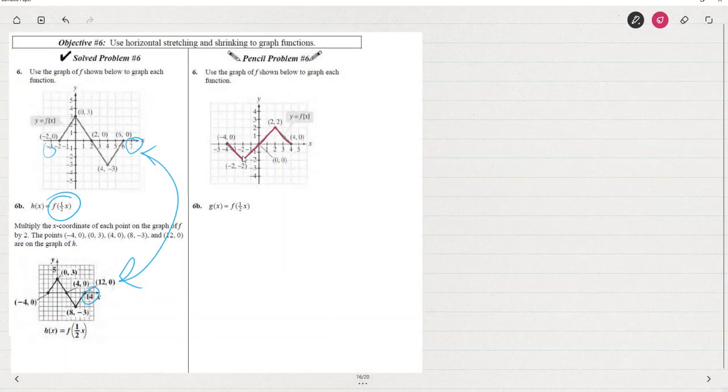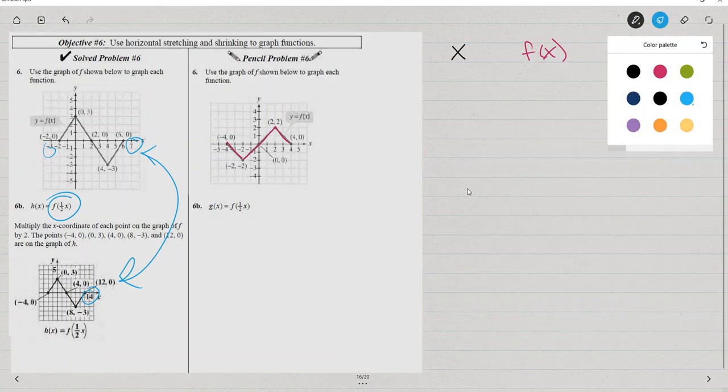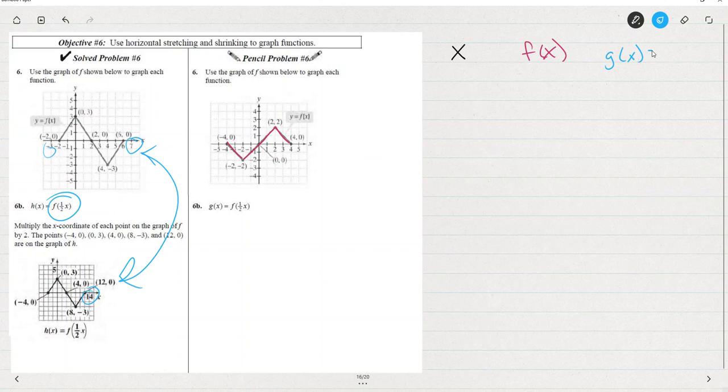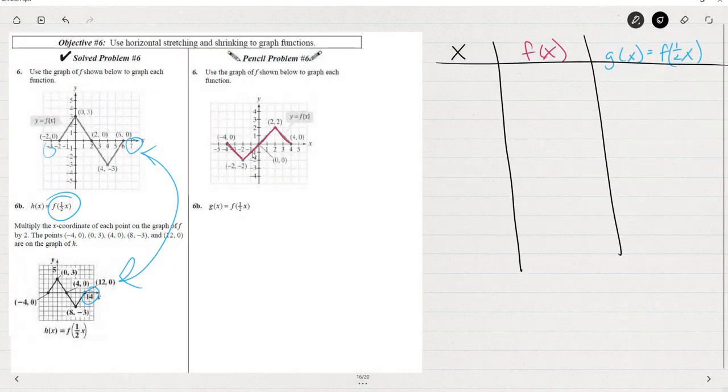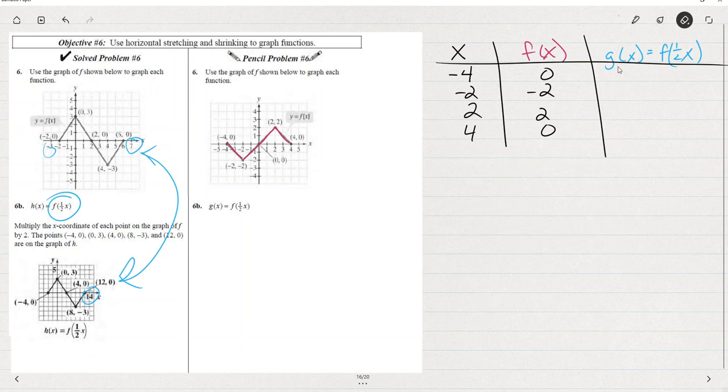Use the graph of f shown below to graph each function. So if we wanted to graph f of 1 half of x, we're going to take each of the x's and double it. So could we try this one without making the chart? I think you could go back and do the chart. Let me show you what that would look like again. We'd have x, f of x, and g of x, and name each of these x's that we've got. So we've got negative 4, 0, negative 2, negative 2, 2, 2, 4, 0. We could find out when we do half of x and see what happens to each of those points using a chart.